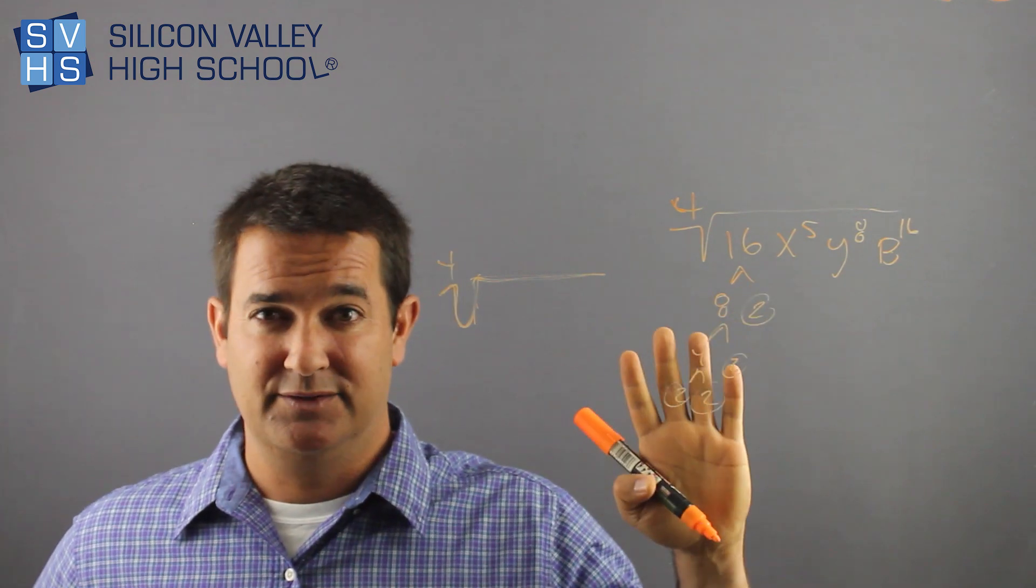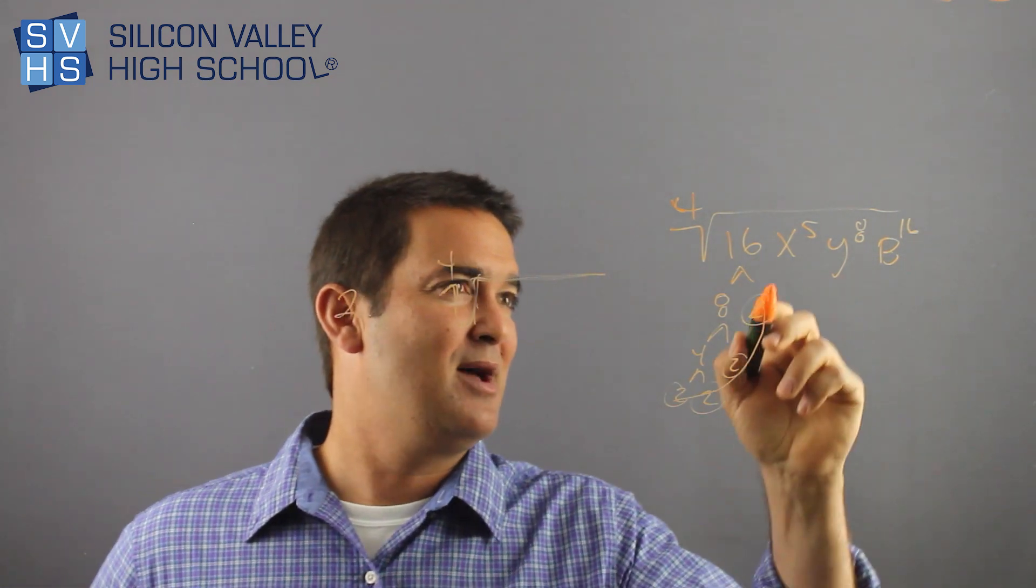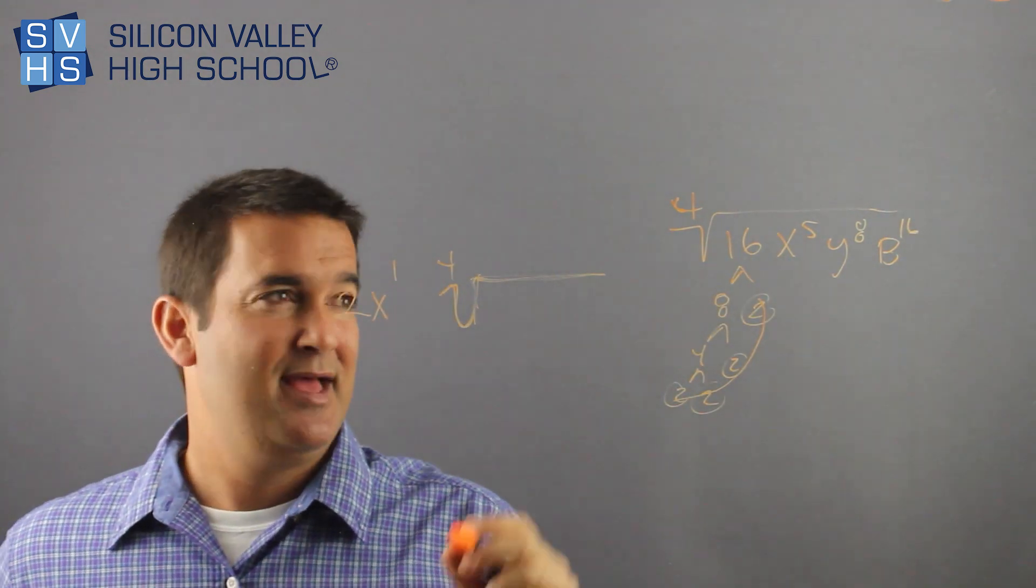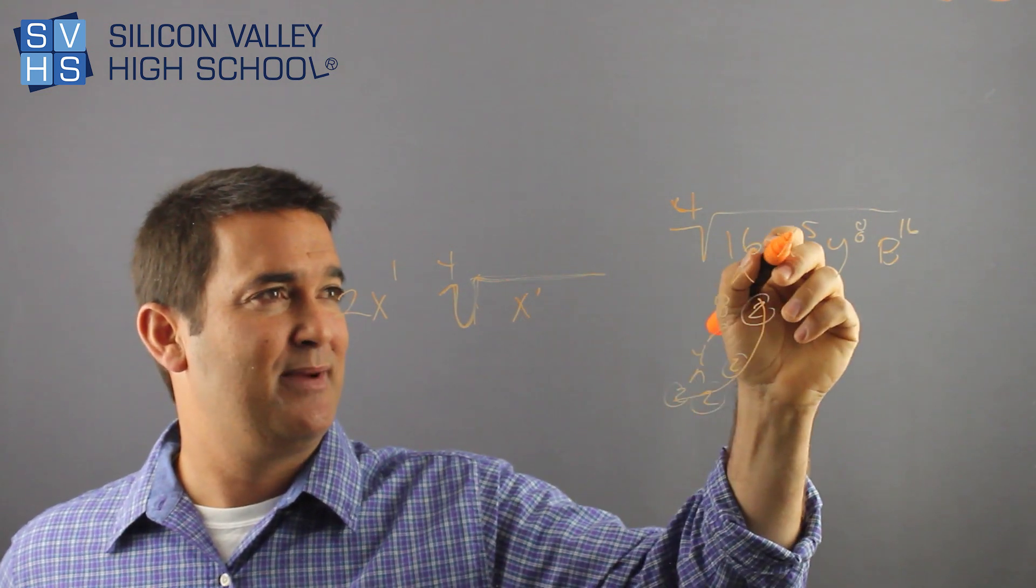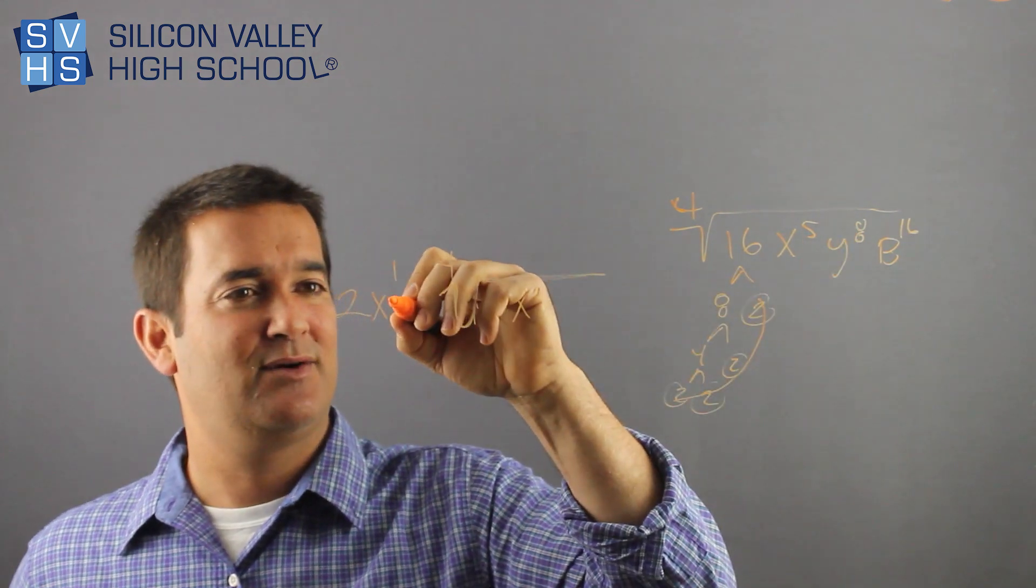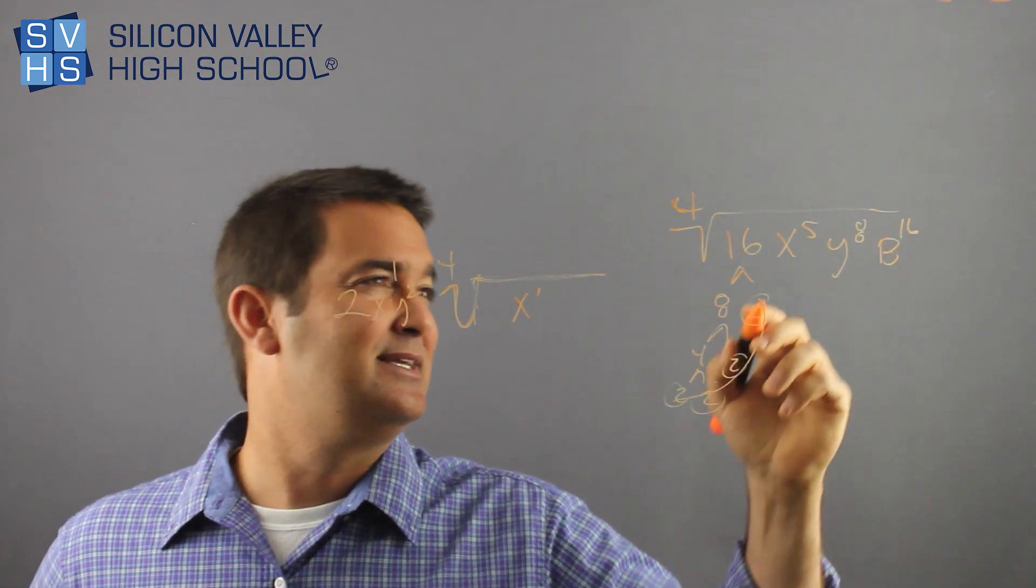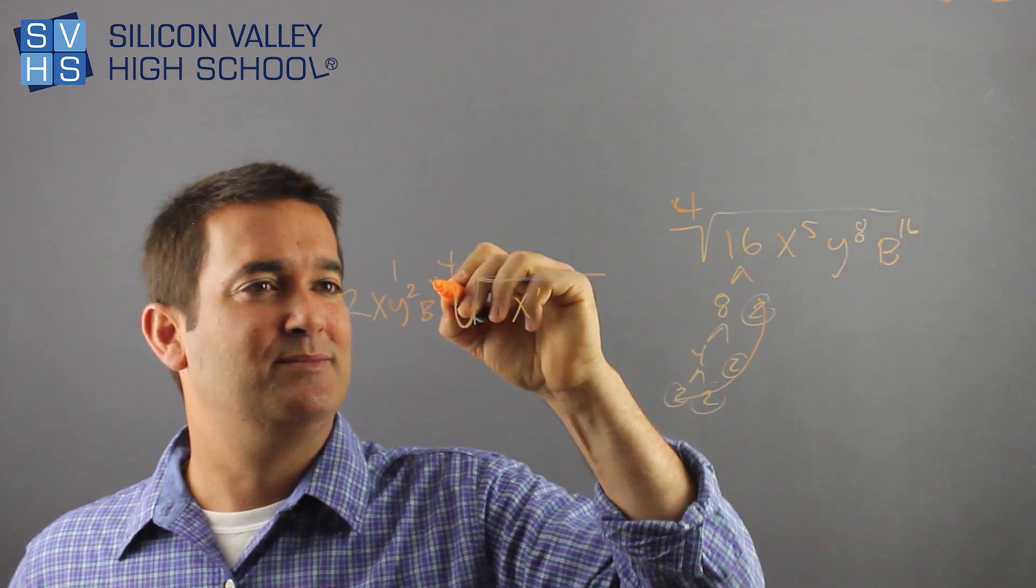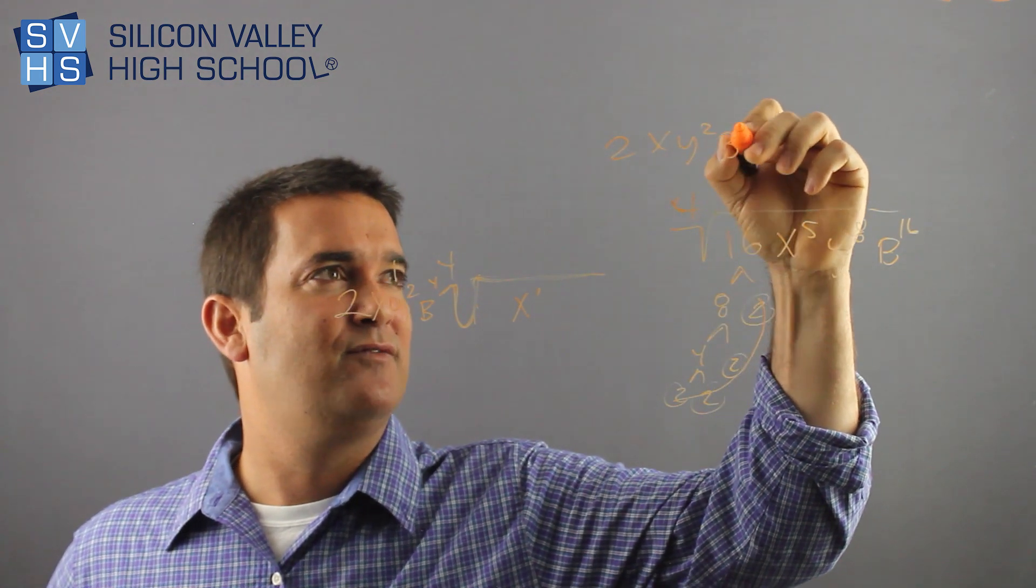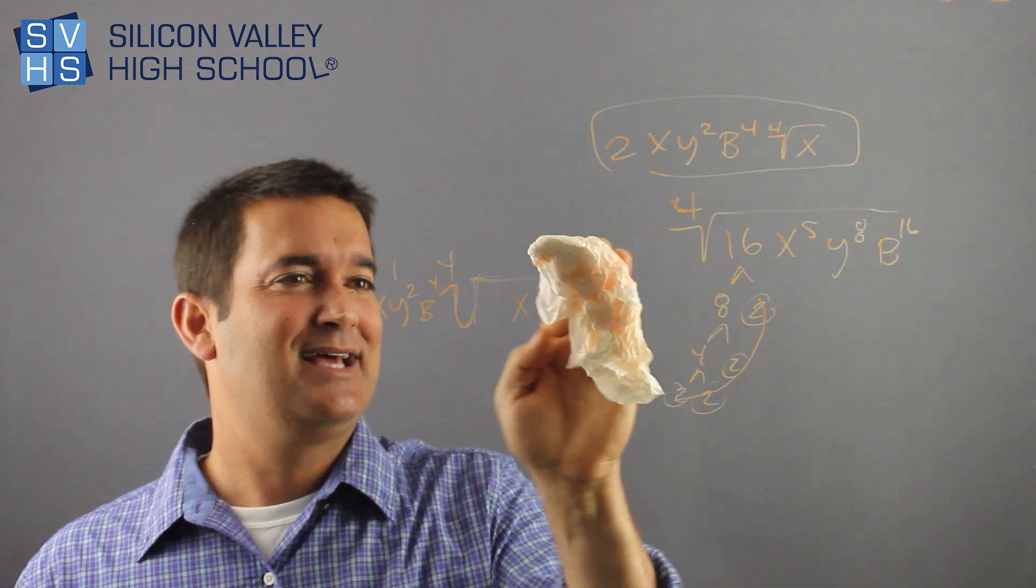So there's definitely four twos. So that whole group, four twos comes out as one single two. Now I'm not going to write five X's. I'm too smart for that. How many times does four go into five? Once. So X to the one comes out and how many are left in jail? X to the one is my remainder. Four goes into five one time and then there's one left. How many times does four go into eight? Twice. So I have Y squared. No Y's left in jail. Right? There's no Y's left in jail because four went into eight evenly. B to the 16th? Well, that goes in evenly as well. So B to the fourth comes out here. Four to 16, four times. So my answer is 2XY squared B to the fourth. Fourth root X. That little X guy must be a bad guy because he's still in jail. So that's how you do them.